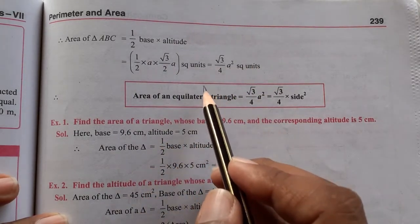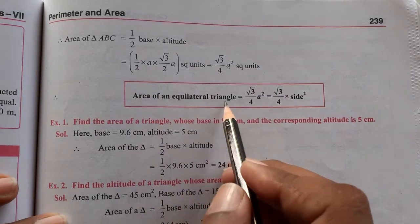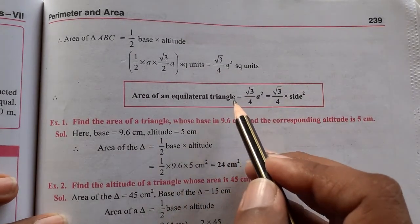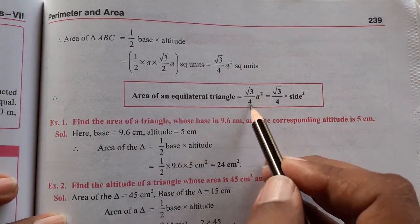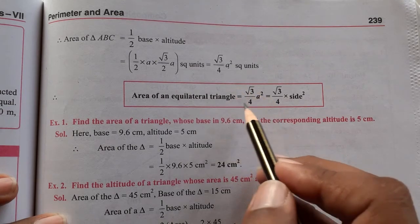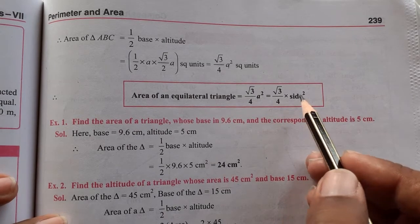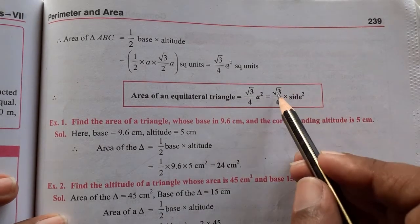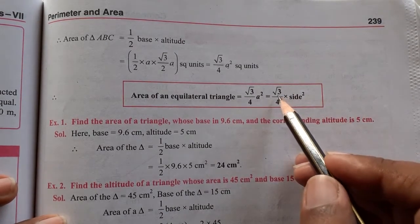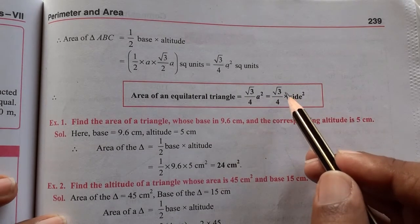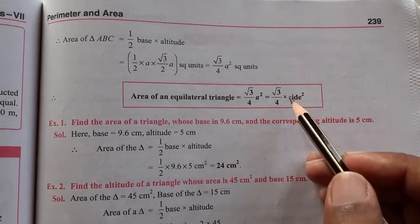So if a is a side, when you give an equilateral triangle, then root 3 by 4 a square will be our formula, where a is our side. If you think about root 3, the value of root 3 is 1.732. Remember that root 3 is what we have.